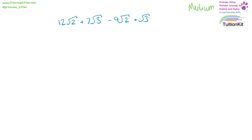12 square root 2 minus 9 square root 2 is 3 square root 2. 7 square root 3 plus square root 3 is plus 8 square root 3. So the answer is 3 square root 2 plus 8 square root 3.